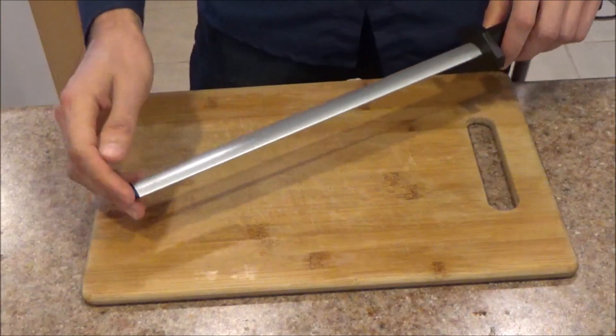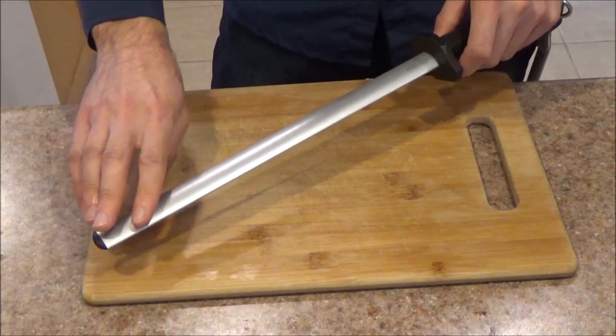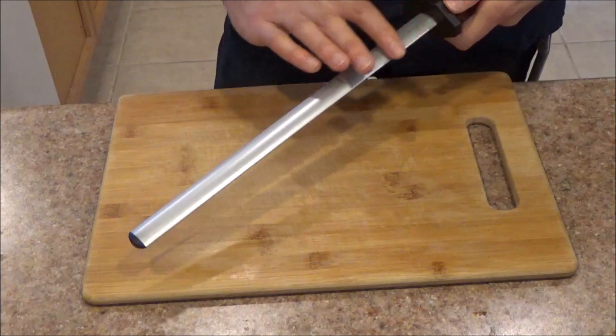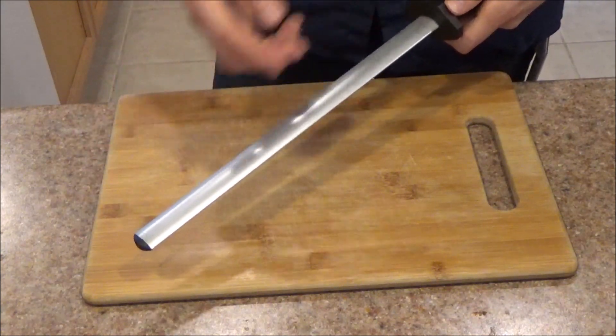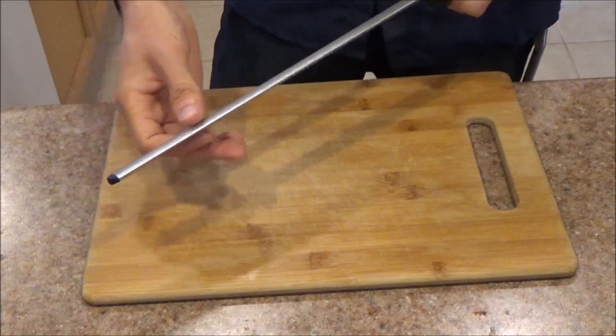Moving on to functionality. To start off with the most important thing with a diamond steel, you want to make sure your honing surface is consistent. That is absolutely critical. You want to look for any bumps, any indentations, anything that stands out from the rest of the surface.